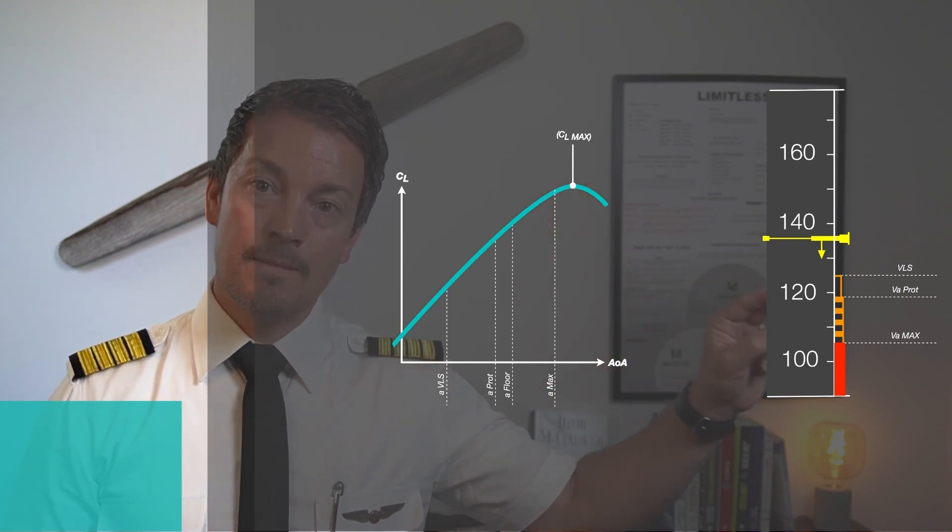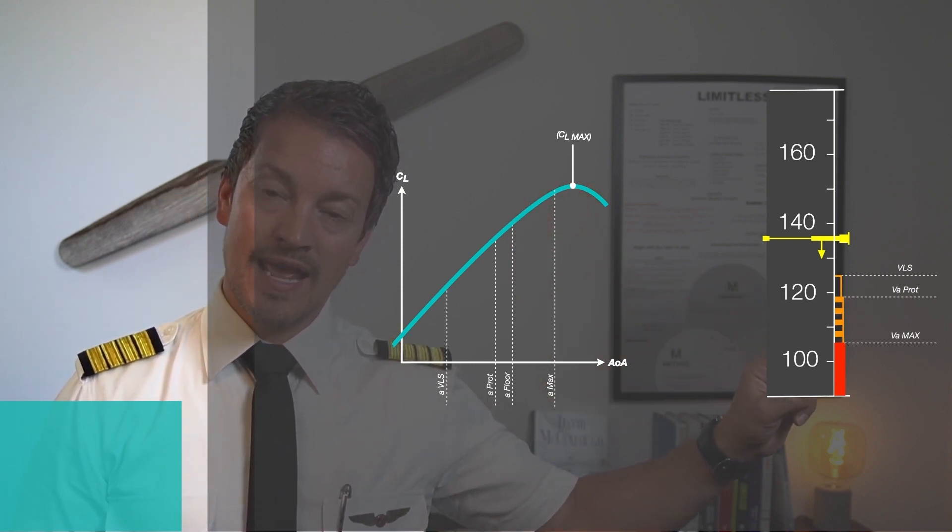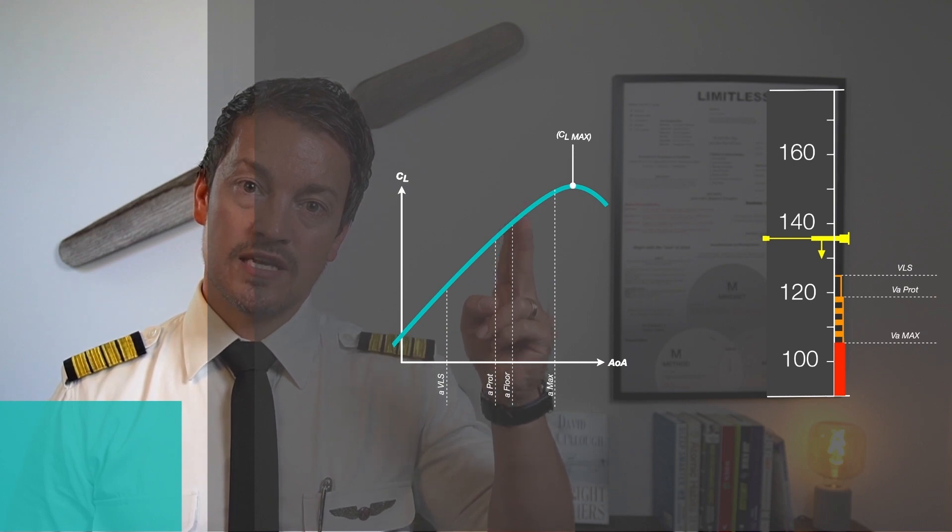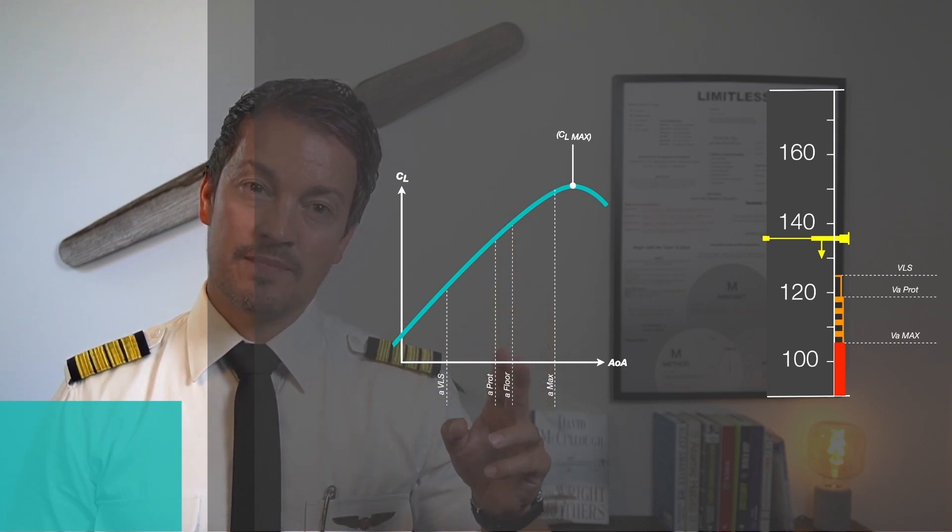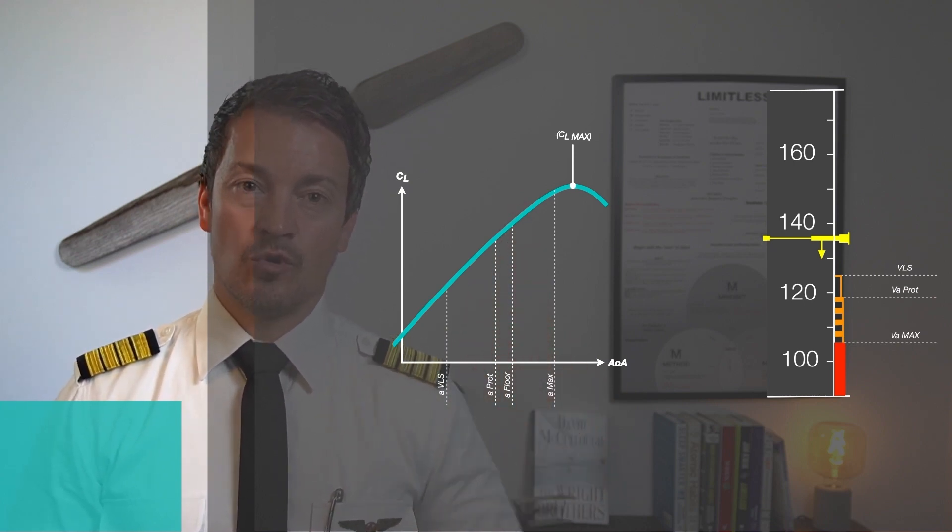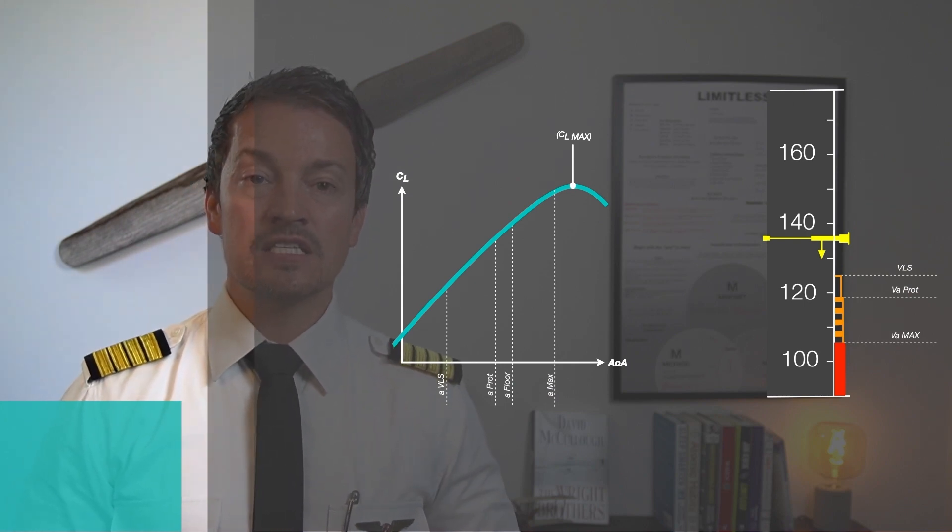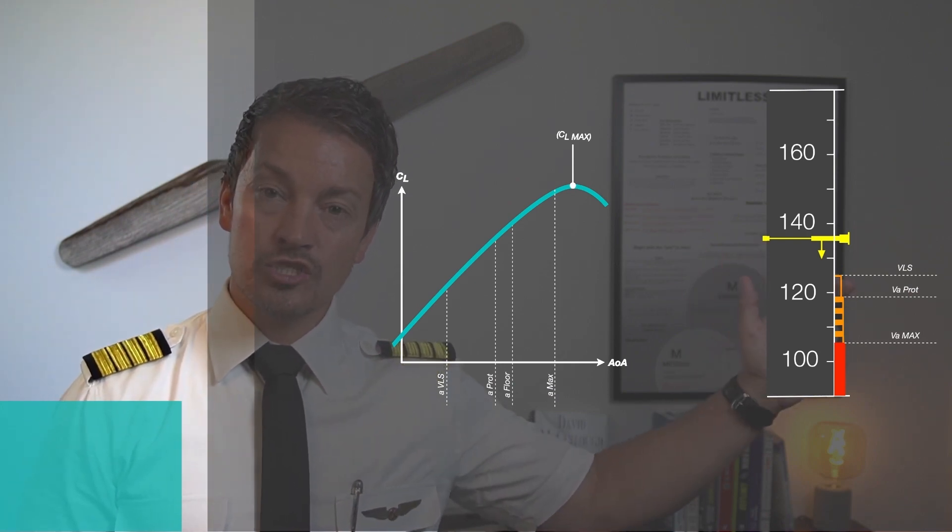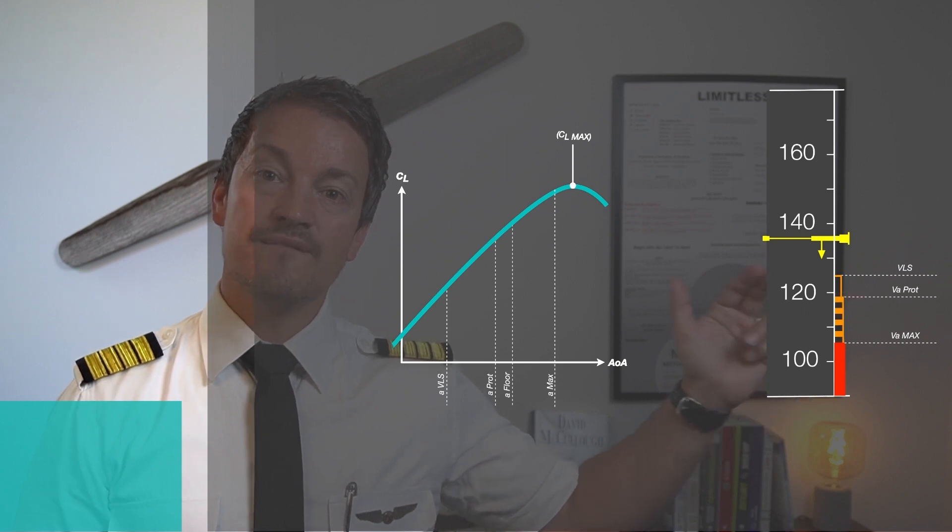But what happened in the middle between V-alpha prot and V-alpha max was the line which I skipped, and it's called V-alpha floor. I skipped it for a reason because it is not depicted on your speed tape and it is a function of the angle of attack on the side stick.